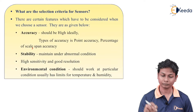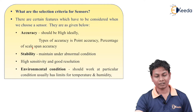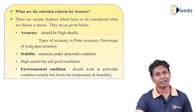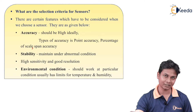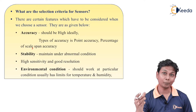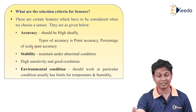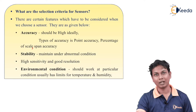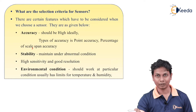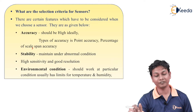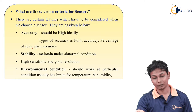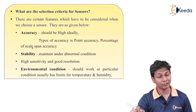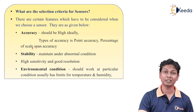Now there are selection criteria as well. This means that depending upon the application, which sensor has to be used and which sensor should be selected — that is determined by the selection criteria. There are certain features that have to be considered when we choose a sensor, as given below. We will start with accuracy.